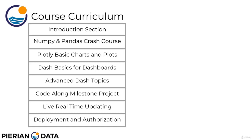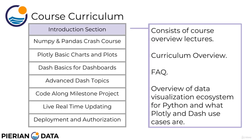So this is the overall course curriculum. These are the main topics — not exactly lined up with the sections, but you can think of these as the overall themes we're going to cover throughout this course. We first start off with the introduction section, which is basically the section you're in right now. It consists of the course overview lectures, a frequently asked questions lecture that you can quickly check, and also a general overview of the data visualization ecosystem for Python and what Plotly and Dash use cases are. We'll cover a broad explanation of what Plotly is, what Dash is, what different types of problems they solve for you, and general information so you can be informed of what you're going to learn throughout the course.